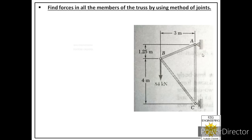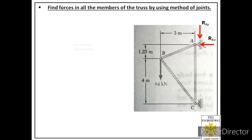The next step is to label the reactions which these supports provide. Pin support provides two reactions: one normal to its surface and one along its surface. At the start of the problem we don't know the direction of these reactions, so we make assumptions. We have assumed this reaction is acting towards left and this reaction is acting in the downward direction.